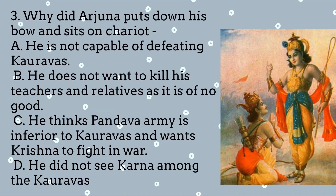Why did Arjuna put down his bow and sit on the chariot? A. He is not capable of defeating the Kauravas. B. He does not want to kill his teachers and relatives as it is of no good. C. He thinks the Pandava army is inferior to the Kauravas and wants Krishna to fight in the war. D. He did not see Karna among the Kauravas.